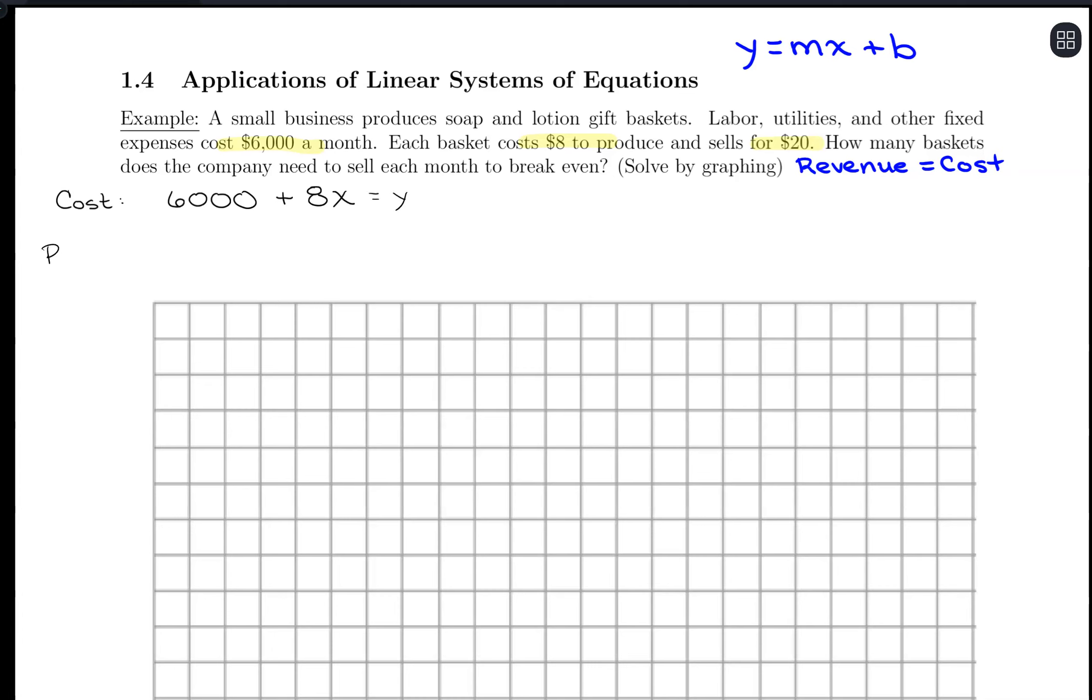And then for revenue, we will have a revenue that is 20 times the number of baskets. So $20 times x, because however many baskets we sell, we're making $20 per basket. All right, so we're going to try this solving with graphing.